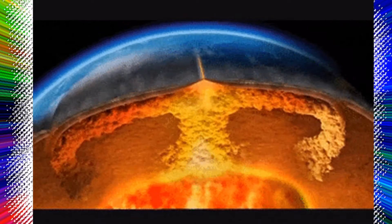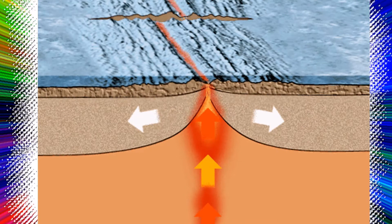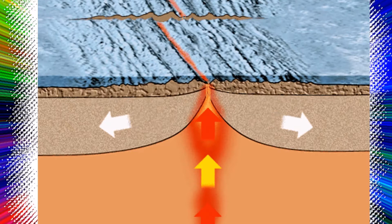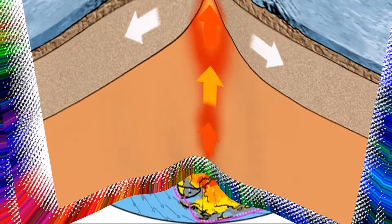The theory of plate tectonics is based on a broad synthesis of geologic and geophysical data. It is now almost universally accepted, and its adoption represents a true scientific revolution, analogous in its consequences to quantum mechanics in physics or the discovery of the genetic code in biology.